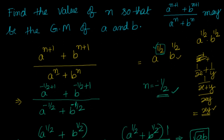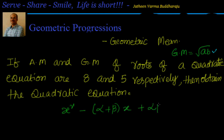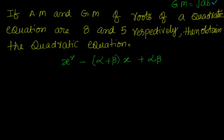Let us solve one more problem based on geometric means. If the AM and GM of the roots of a quadratic equation are 8 and 5 respectively, obtain the quadratic equation. If the roots are alpha and beta, the quadratic equation is x squared minus (alpha plus beta) times x plus alpha beta equals zero.